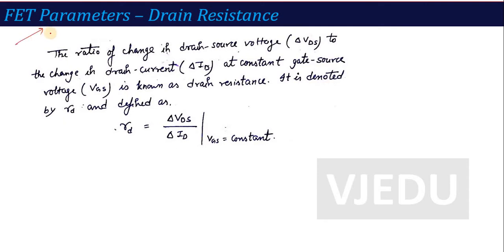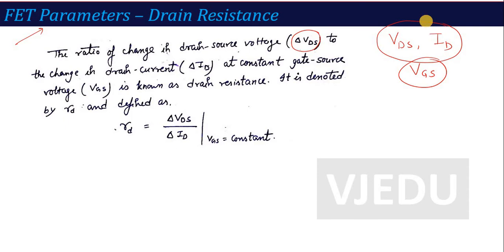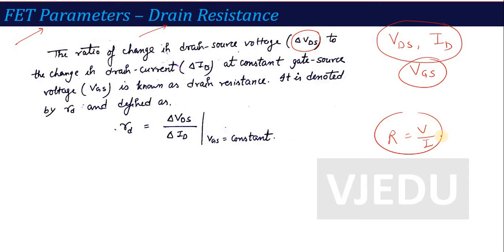Let's start our lecture on FET parameters. In FET, we have three terms: drain-to-source voltage VDS, output current ID, and input-side voltage VGS. From these three parameters, we can form different device parameters. If I want to make a resistance — drain resistance — resistance is defined as V by I. So the first parameter is drain resistance, which is drain-to-source voltage with respect to drain current.